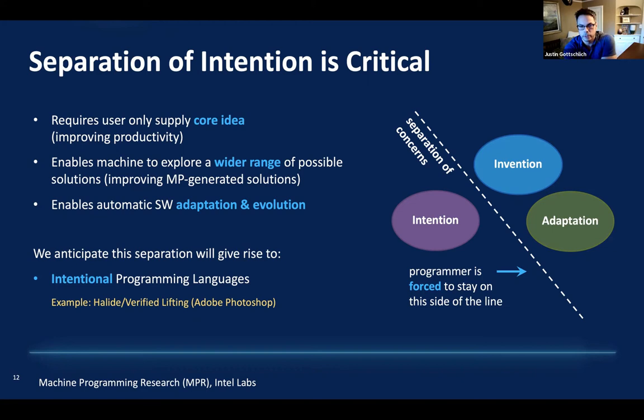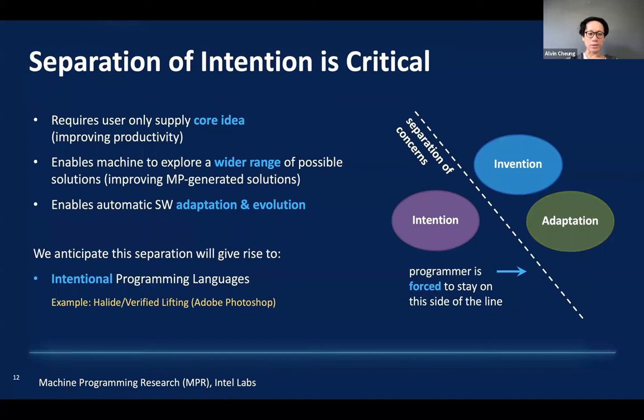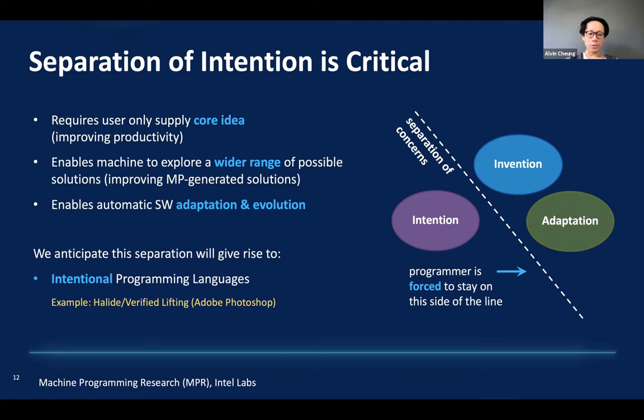Alvin asks: when you mention specifying intentions using the red-black tree example, for an intentional programming language, does that mean they need to have some way to specify a container? If we're taking that away, how do they even specify? The speaker acknowledges it's a great question.